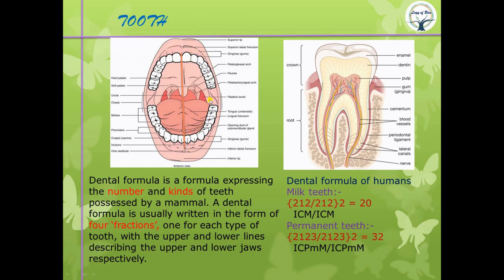The dental formula expresses the number and kinds of teeth in a mammal. It is shown as a fraction representing one half of the mouth because upper and lower jaws may differ — for example, cows lack upper incisors and have a horny plate instead. The dental formula for human milk teeth is 2-1-2 / 2-1-2, multiplied by 2 for both sides, giving 20 milk teeth total.